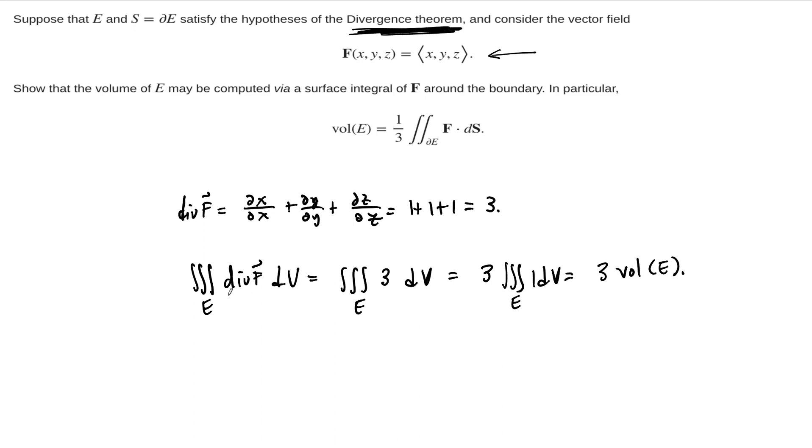So on one hand, we take the divergence of the given vector field, we integrate it. We don't know what the region is, so we can't compute this number, but we know that whatever that number is, it represents the volume of E.